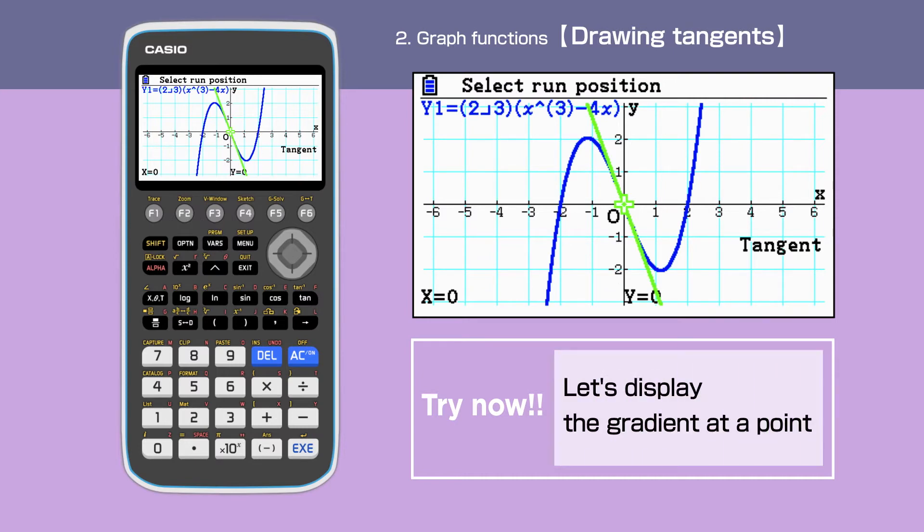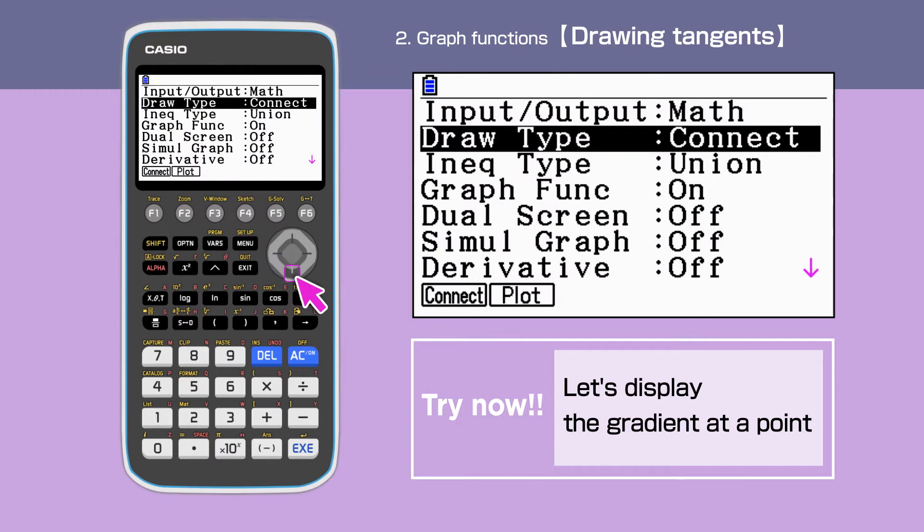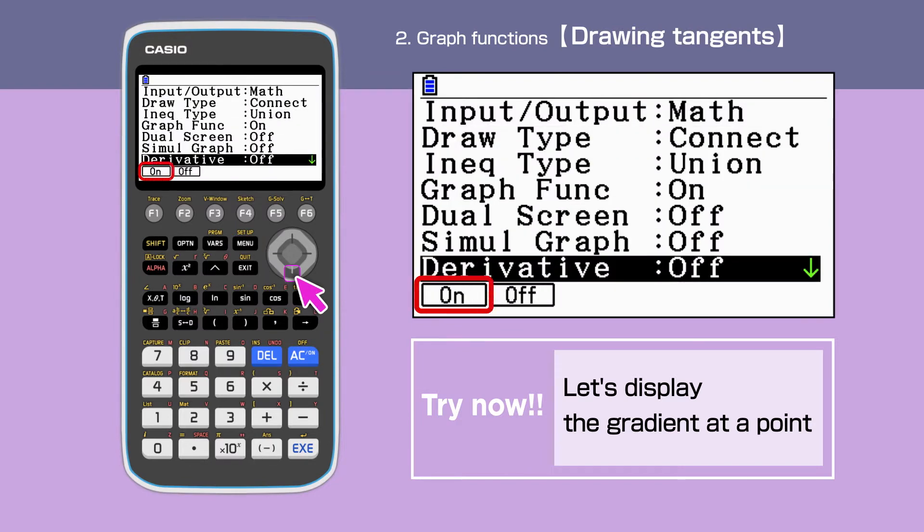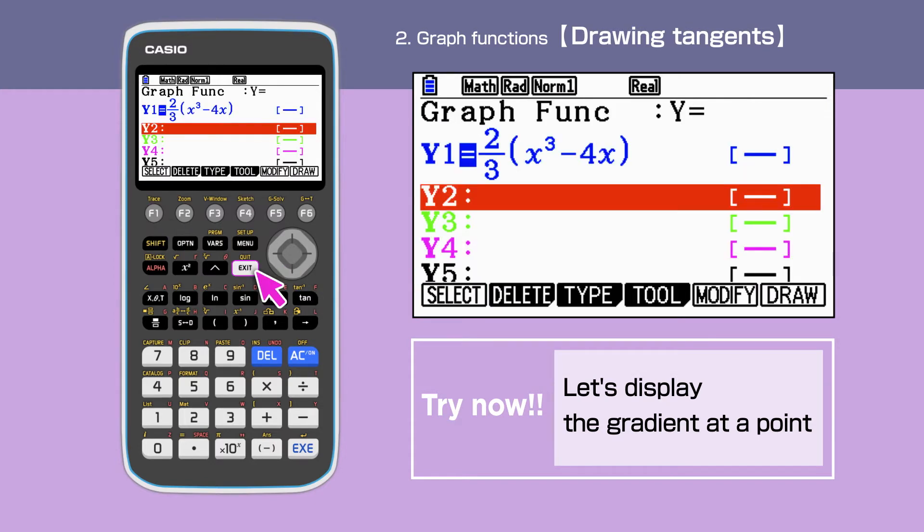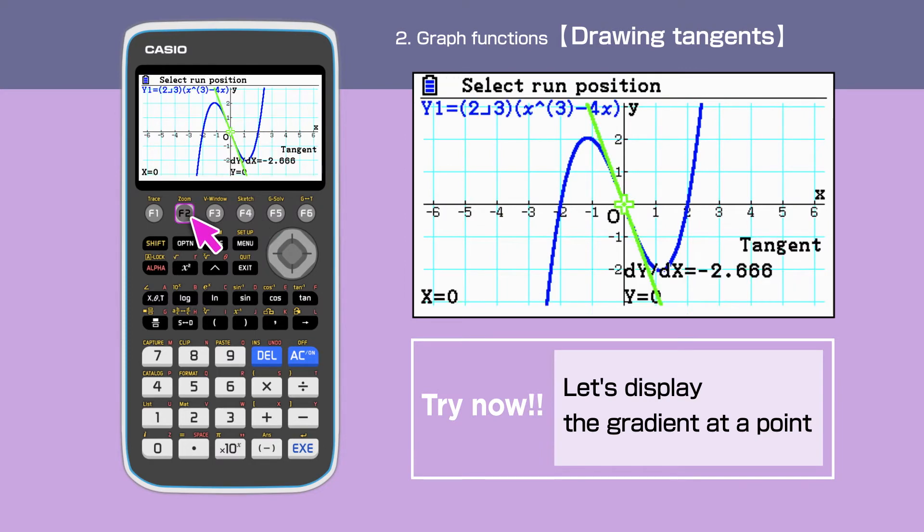The calculator can also work out the gradient at the point. For this, press Shift and switch on the derivative. Exit the setup and draw the graph again. Press Shift, F4, then F2. This time, we have dy by dx on the same screen.